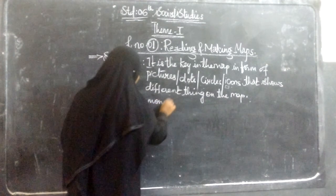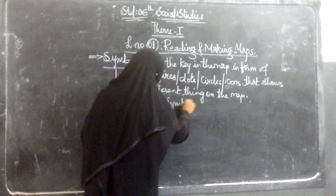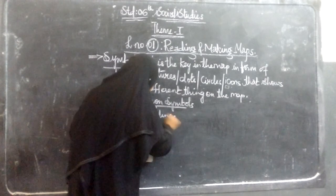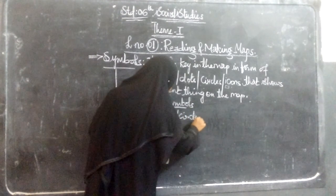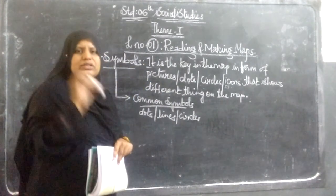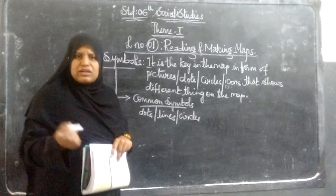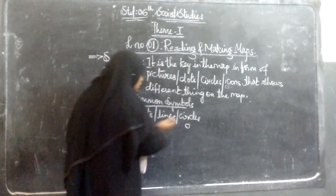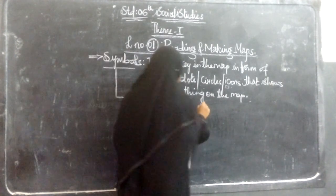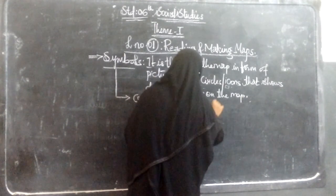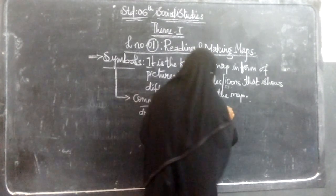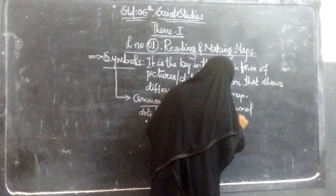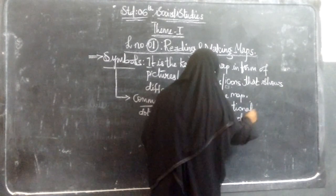Common symbols used are dots, lines, and circles. In every map you can find symbols that the map makers — cartographers — make in the form of dots, lines, and circles, which are very common and can be seen in any kind of map. These common symbols are known as conventional symbols.